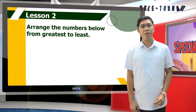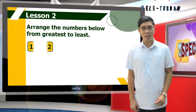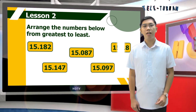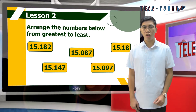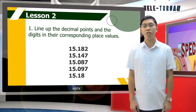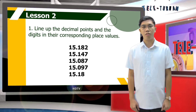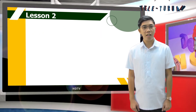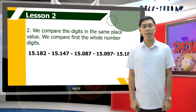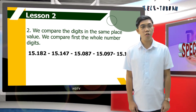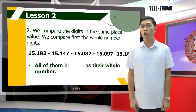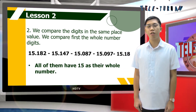Let's try arranging the numbers below from greatest to least. In arranging decimal numbers, all we need to do is to line up the decimal points and the digits in their corresponding place values. Then, we compare the digits in the same place value. We compare first the whole number digits. All of them have fifteen as their whole number.